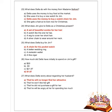Next question: what does Della do with the money from Madame Sofronie? Options are she uses the money to buy food at the market, she uses it to buy a new watch for Jim, Della uses the money to buy a watch chain for Jim, and she gets a haircut to look nice for Christmas. Option C is correct — Della uses the money to buy a watch chain for Jim.